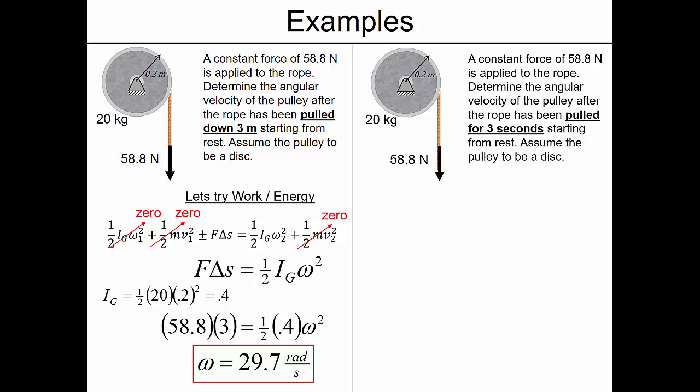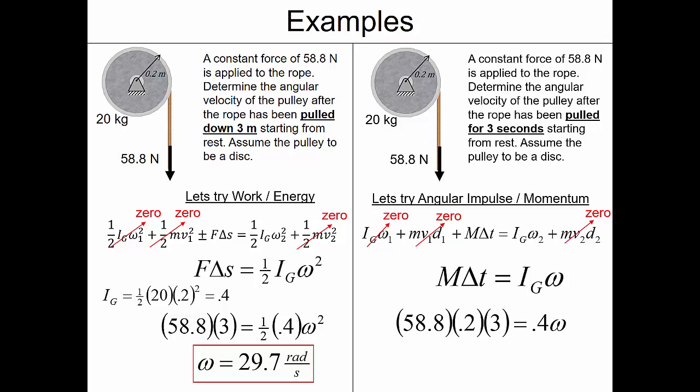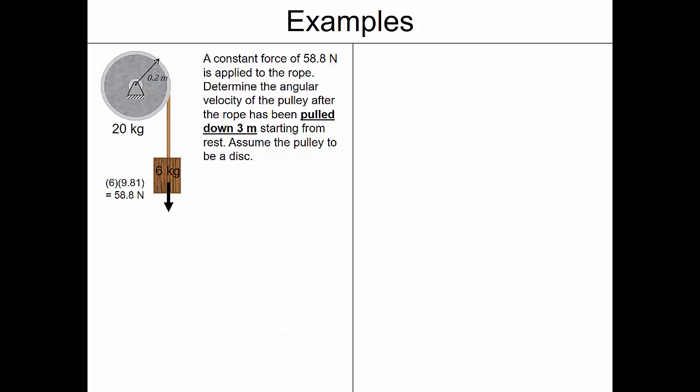What if instead we pull it down for 3 seconds starting from rest? Since we want velocity with a force applied over time, we use angular impulse and momentum. The object starts from rest, and in the end the spool is not translating. So: moment times change in time equals mass moment of inertia times angular velocity. The moment is 58.8 newtons times perpendicular distance 0.2 meters. Substituting: moment times 3 seconds equals 0.4 times omega, giving an angular velocity of 88.2 radians per second.